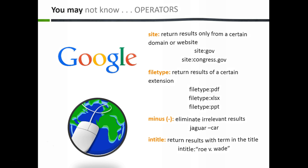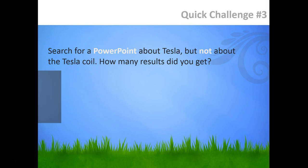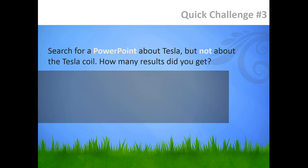Let's try another Google challenge. I want you to search for a PowerPoint about the inventor Tesla, but omit any results about the Tesla coil. How many can you find? Try this in both Google Scholar and Google.com. Pause the video and give it a try, then I'll tell you how I searched.